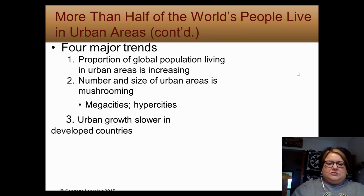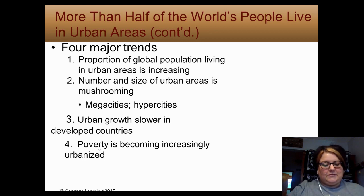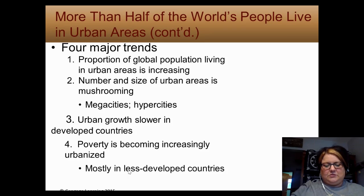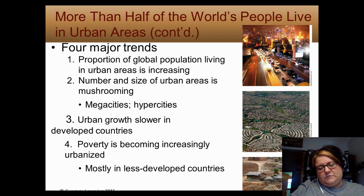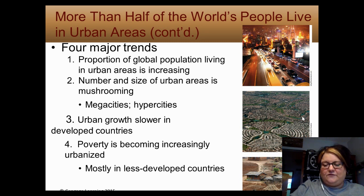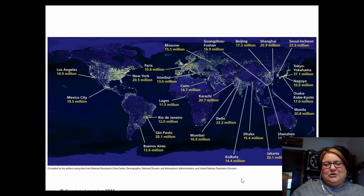Urban growth is slower in developed countries, but developing countries are becoming more urbanized, and poverty is becoming urbanized in less developed countries. Looking at images: Shanghai in China, Phoenix as a great example of what suburbs look like with houses in rows, and a rural area of Malawi, Africa. On the mega cities map — 10 million or more — every dot shows one mega city. Notice most in the US are around the coasts, which connects back to water pollution issues.